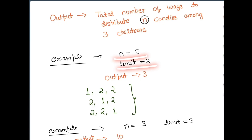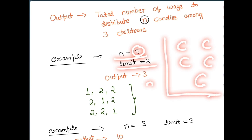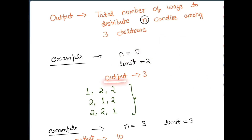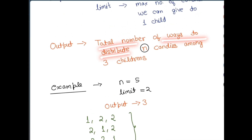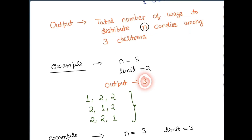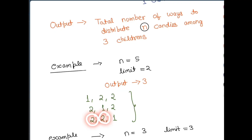For example if n is 5 and limit is 2, it means we have five candies and we need to distribute these five candies into three children such that no child gets more than two candies. The output in this case is going to be three — the total number of ways to distribute five candies among three children. The three ways are: first child gets 1, second gets 2, third gets 2; or first gets 2, second gets 1, third gets 2; or first gets 2, second gets 2, third gets 1.